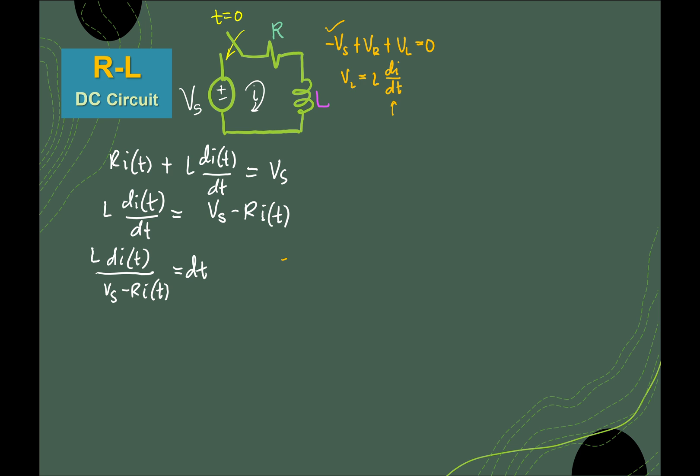Here x becomes the current, i(t), current in terms of time. L is constant — it doesn't change. Resistance R is also constant. Since this is DC, Vs is also a constant. Later on in our AC class that will be a sinusoid, and it would be difficult to solve using variable separable — that's why we try to understand it first with a DC circuit.